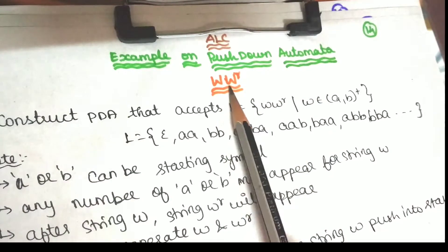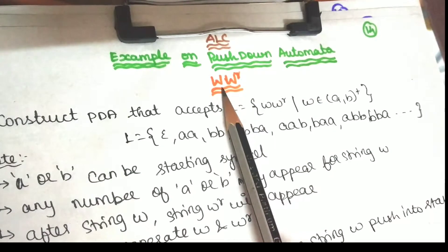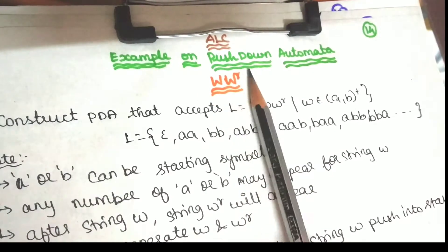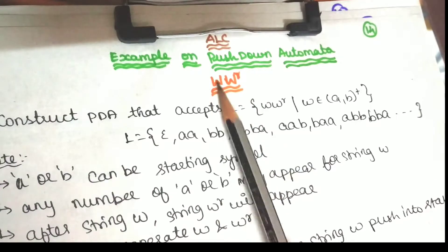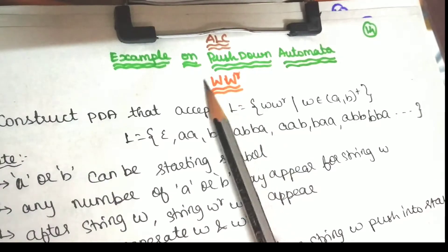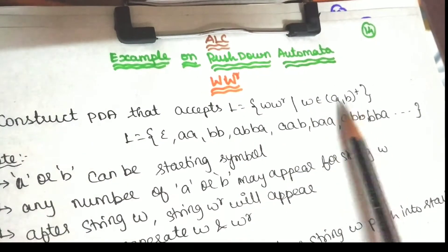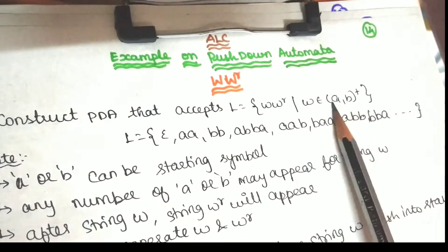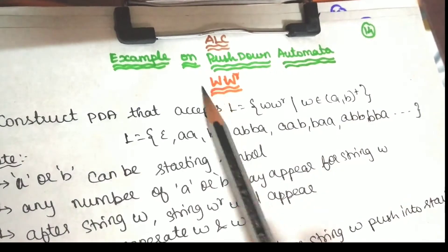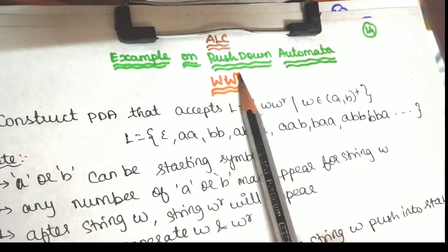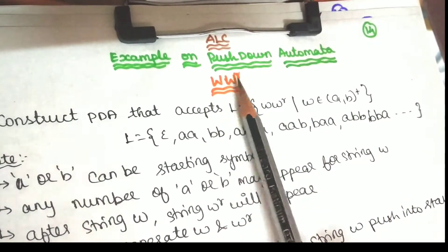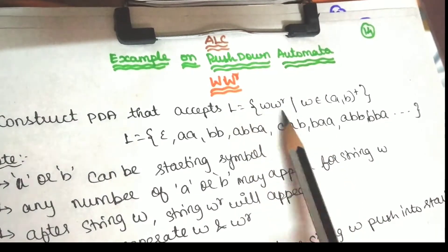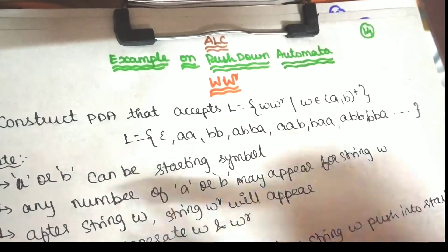How do we talk about language and condition? We are looking at the language W W^R — that is, strings of the form A, B and their reverses. For example, W W^R: A, R.